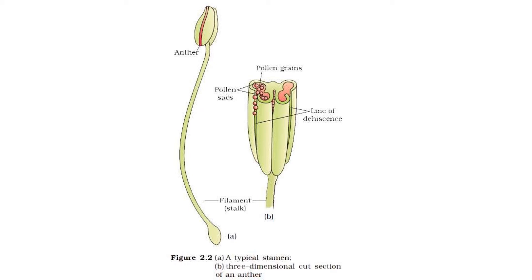The next layers are the middle layers — three middle layers — whose cells generally disintegrate in mature anthers. The fourth and innermost layer is the tapetum. The tapetum cells may be uni-, bi-, or multi-nucleate, and possess dense cytoplasm. The cells of the primary sporogenous layer divide further and give rise to diploid sporogenous tissue. The main function of the tapetum is that it provides nutrition to the developing pollen grains.